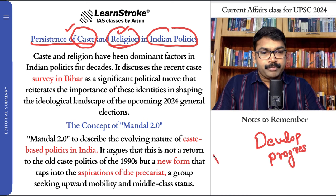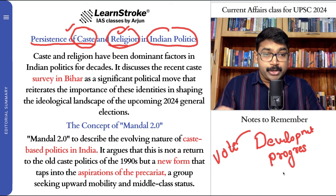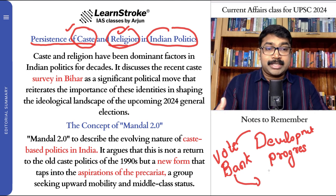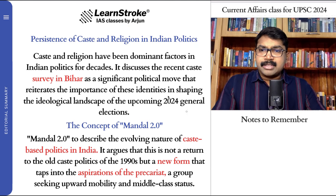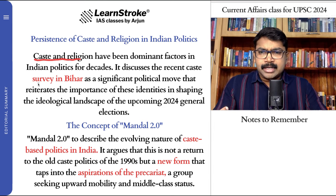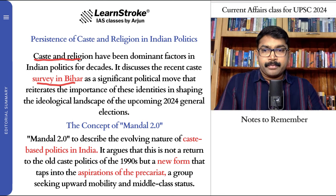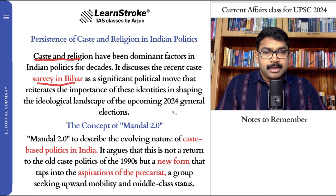In India, we should vote for development and progress. But unfortunately, votes become vote banks — people are voting in the name of caste and religion, which is not very good for Indian democracy. Caste and religion have played a very dominant factor in Indian politics. The recent caste survey in Bihar is seen positively by certain people but negatively by others, and these identities are being used for the 2024 elections.